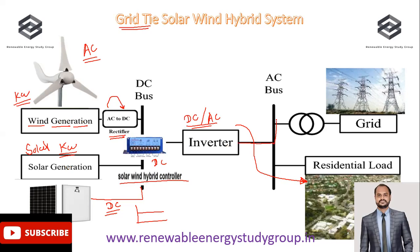This power supply can be directed through a net metering system to the grid for export, or used for residential running loads. Based on the frequency of 50 Hz, phase, and voltage received from the grid, the inverter smartly senses and synchronizes these parameters, and power balancing occurs in the grid-tie solar wind hybrid system. The solar wind hybrid controller plays a very important role in stabilizing power received from both the wind machine and the solar power plant.